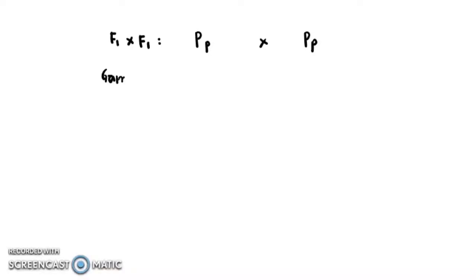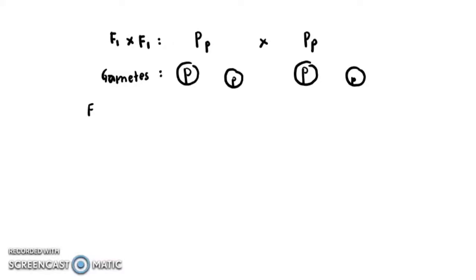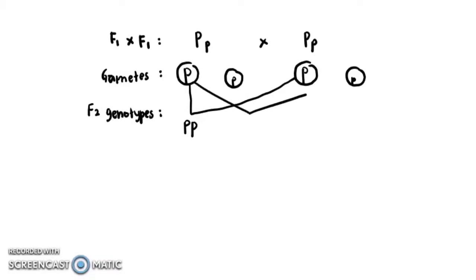The gametes for the first heterozygous parent are P and p, and for the second one also P and p. For the F2 genotypes, crossing the gametes gives: PP, Pp, Pp, and pp. These are the four genotypes of the F2 generation.